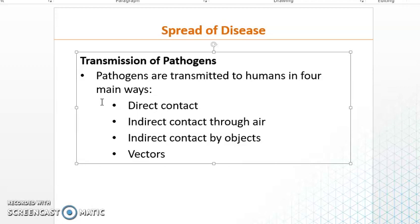Let's talk about each of these ways one by one. Direct contact means simply shaking hands, touching, or wearing the same clothes. The pathogen can pass from one person to another through hands, through breathing, or by talking directly to each other. Direct contact also applies when a pathogen is transmitted from an animal to a human through direct contact between the human and that animal.